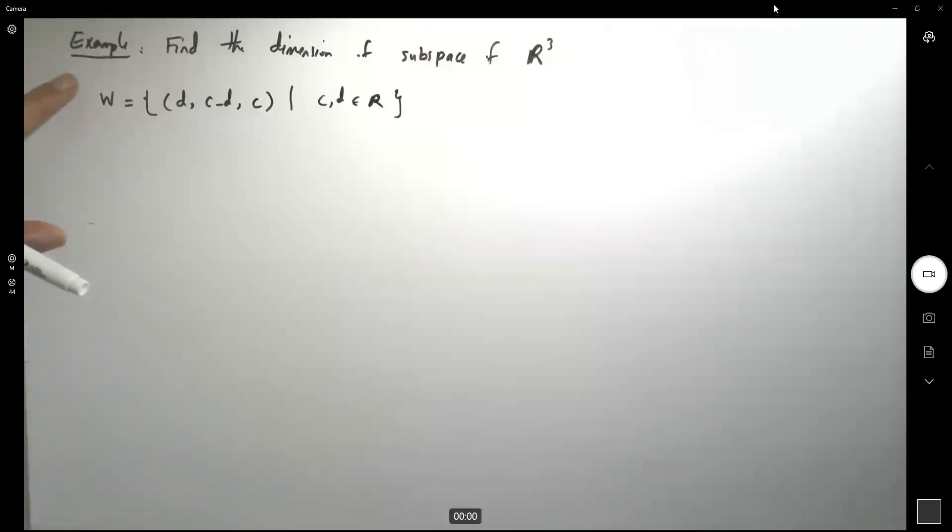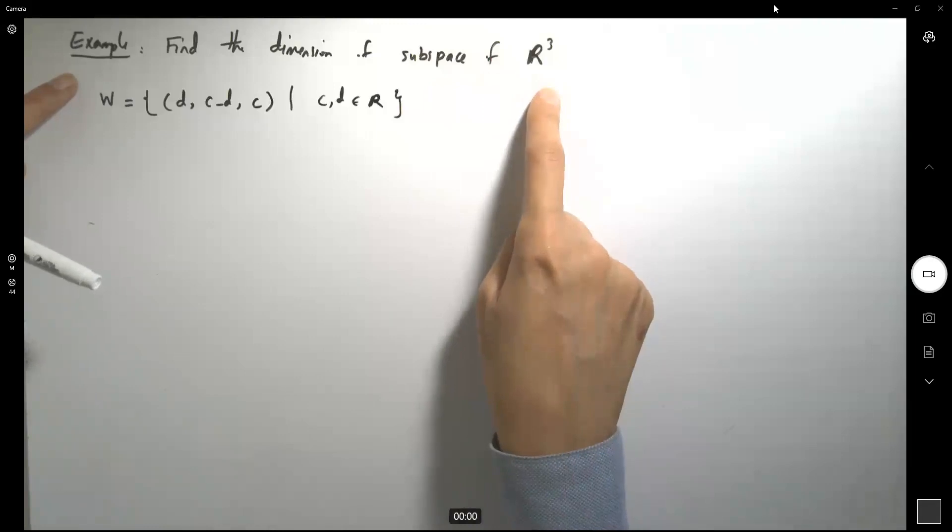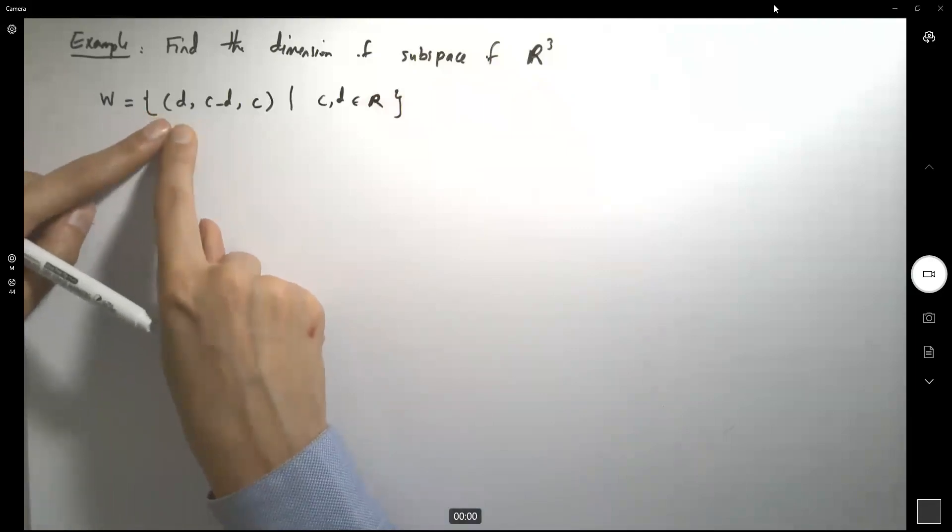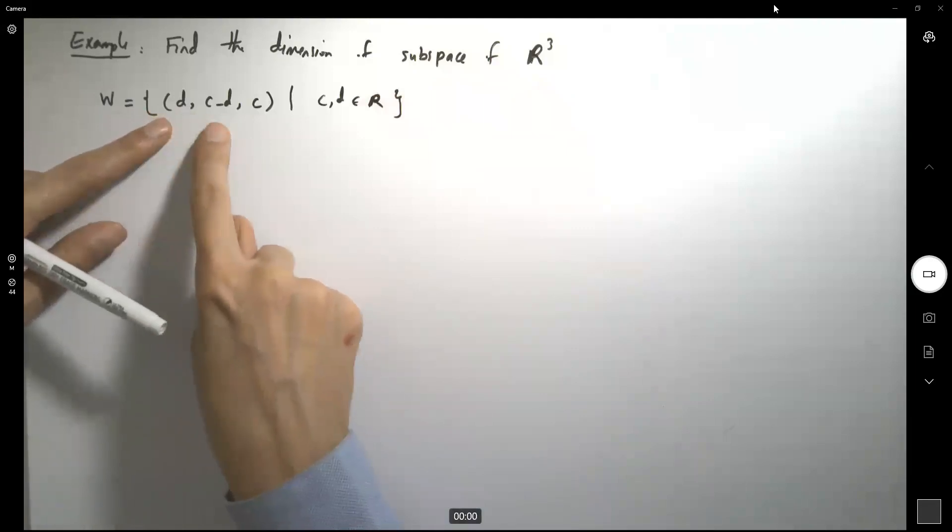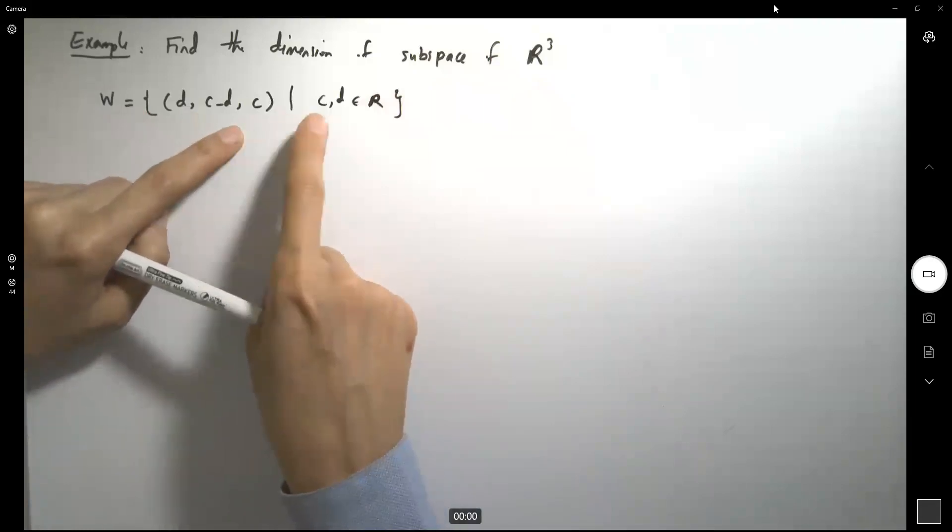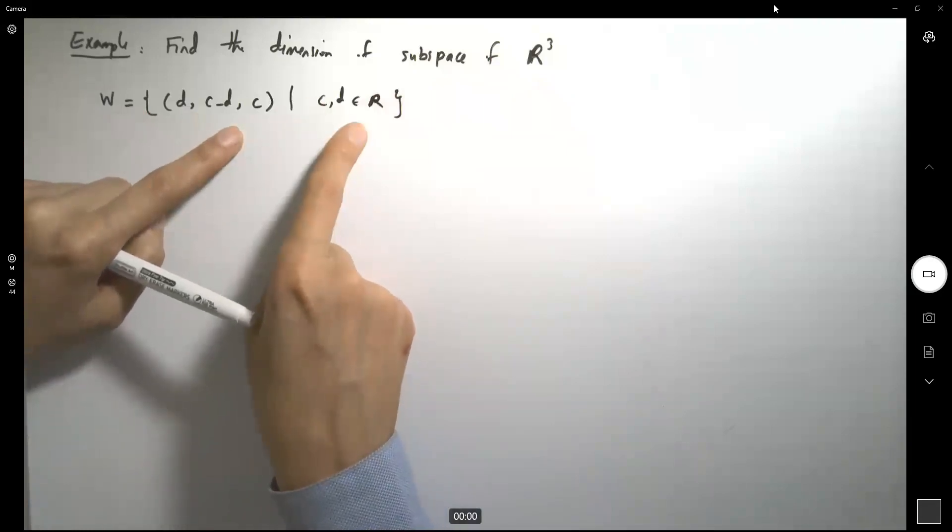This example says finding a dimension of a subspace of this space. The subspace is given to you as, the very first element is D, the second element is C minus D, and the last element is C, and C and D are both real numbers.